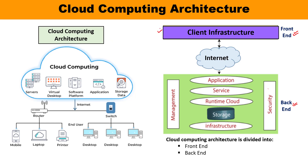The first component you can observe is client infrastructure. Client infrastructure is part of the front end, and it contains the applications and the user interface which are actually required to access the cloud platform. For example, suppose a client has developed certain applications like Zomato, Ola, or Uber, and the client has hosted them on the cloud itself — that is what client infrastructure is.